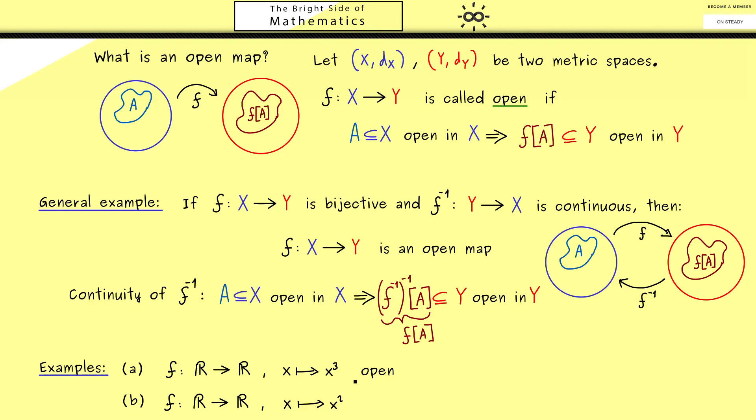But still it could be an open map. Of course, this is not the case—it's not an open map, as you can see when considering the open set as the open interval minus 2 to 2. Then the image is simply the interval 0 to 4, and there you see this is not an open set in R.